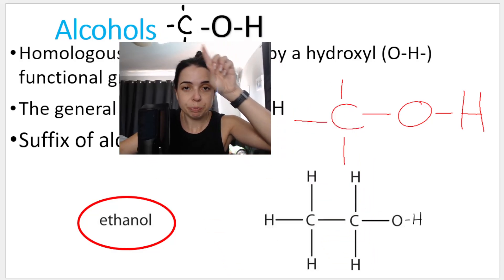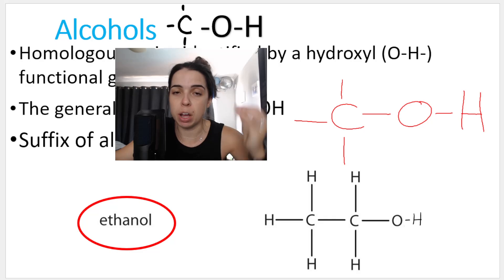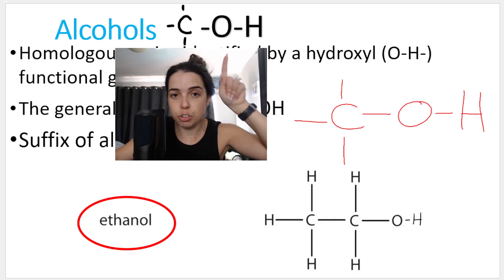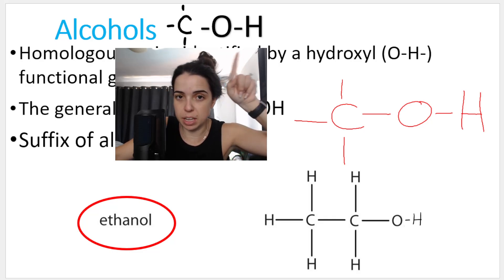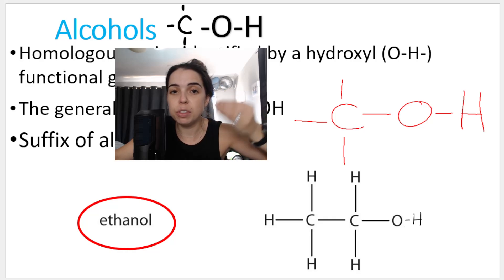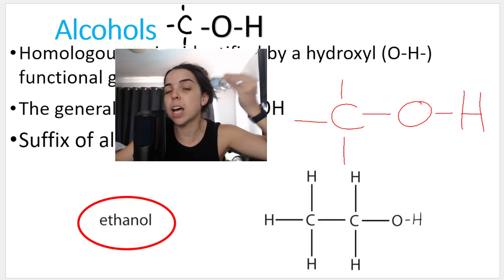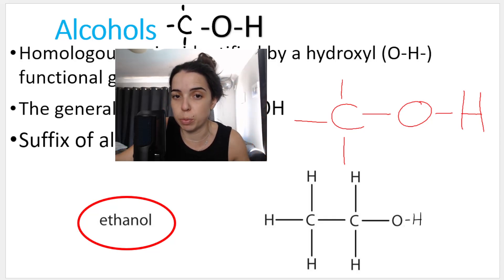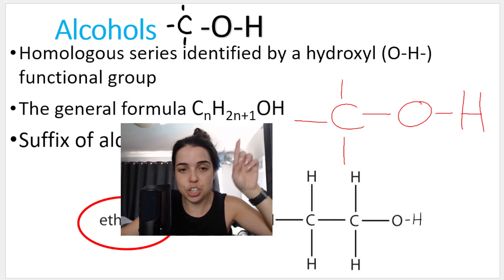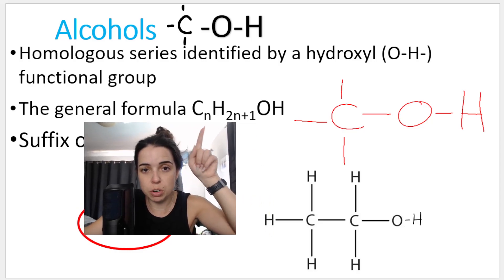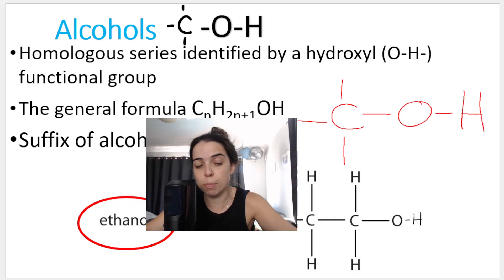This is what we call the structural formula of the functional group of an alcohol. A functional group is a bond, an atom, or a group of atoms — in this case a group of atoms — that gives the homologous series its chemical and physical properties, helping us identify the homologous series. And here's the general formula for alcohol, so as soon as I know the number of carbons I can work out how many hydrogens we should see in this compound.